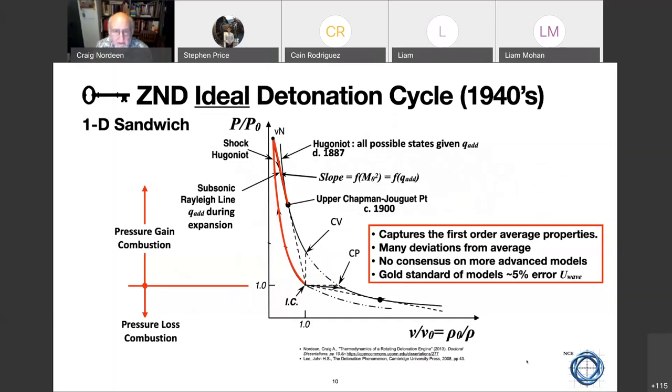And it stands for Zeldovich von Neumann and Doering. We have a Russian, an American, and a German that came to the same conclusion in the 1940s as to its detonation. This is a PV diagram, volume, non-dimensional volume on the x-axis pressure on the y. And it's normalized to the upstream value of one for reference pressure and density. So anything above one is a pressure gain combustor. Anything below it is a pressure loss combustion. That would include the Brayton cycle.